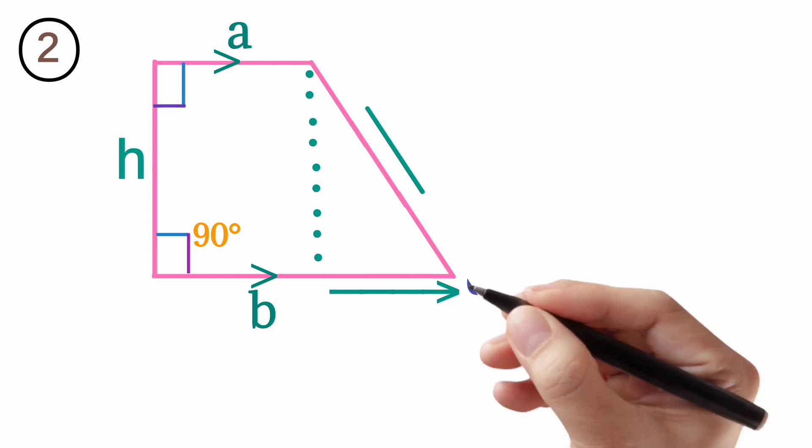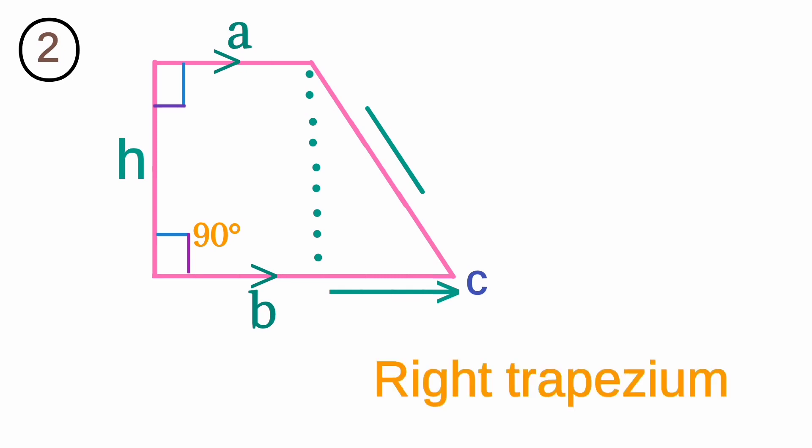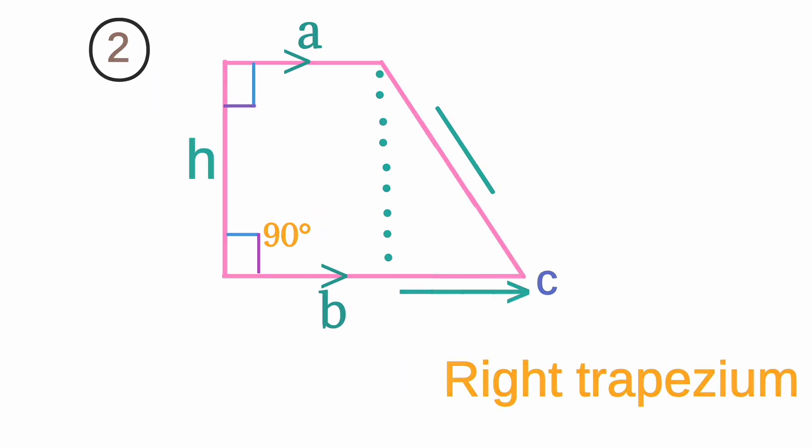We have point C. The arrow from B meets C, as does the slant line. They meet at C to create an angle which faces the dots, or the height. This diagram contains a single right-angle triangle and a rectangle. So it is a right trapezium, or right trapezoid.